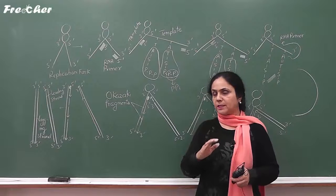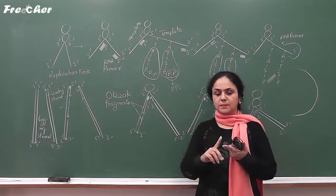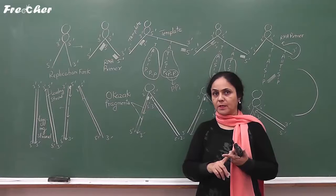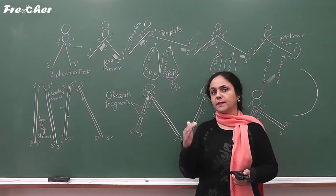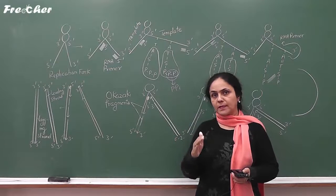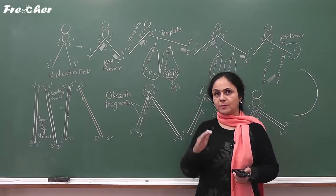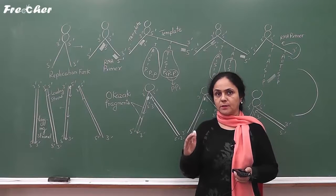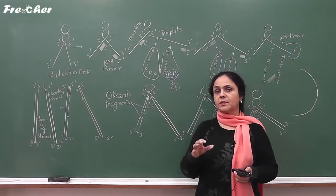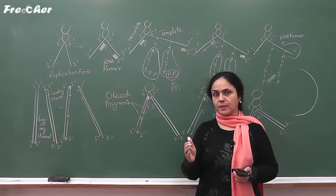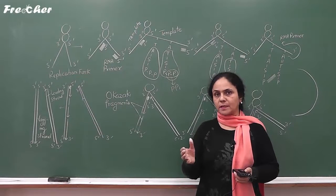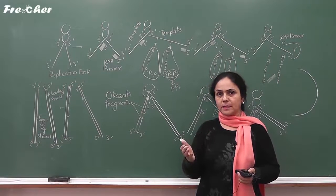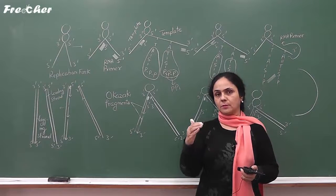In prokaryotes, DNA polymerase is of three types: DNA polymerase 1, DNA polymerase 2, and DNA polymerase 3. DNA polymerase 1 is the main proof reading enzyme; it removes RNA primer and fills the gap that appears after removal of RNA primer. DNA polymerase 3 is the main polymerizing enzyme but can also perform proof reading. DNA polymerase 2 is not a very prominent enzyme but can perform both polymerization and proof reading activity.